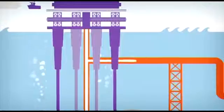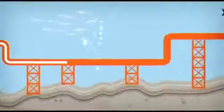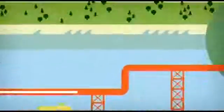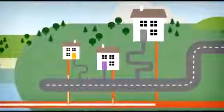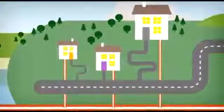National Grid then takes the gas from the shore and sends it around the countryside through steel pipelines over one metre wide. As the gas gets closer to homes, the pipelines split into smaller ones, which may only be 20 millimetres wide.